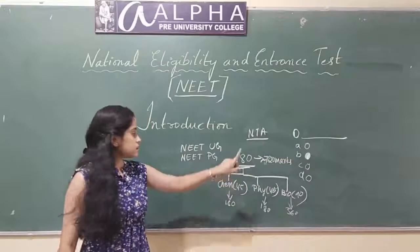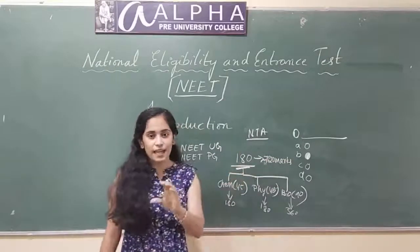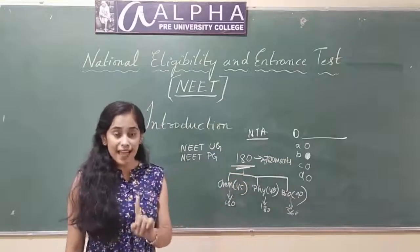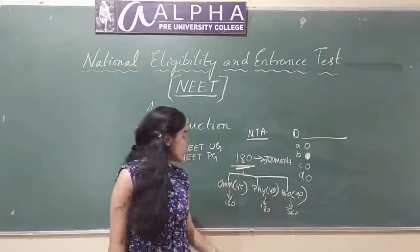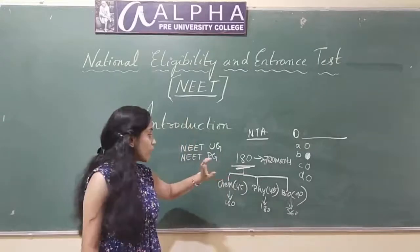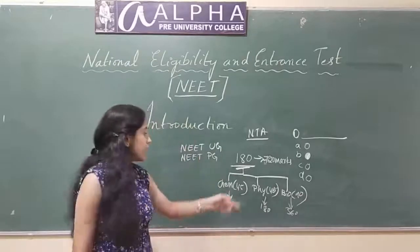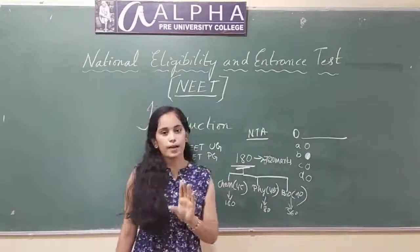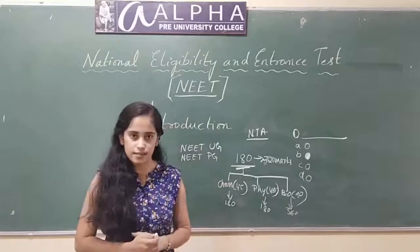You need to answer 180 questions for 720 marks and the time limit is 180 minutes. That means you will get an average of 1 minute to answer each question, and 180 questions in 180 minutes — that is 3 hours.